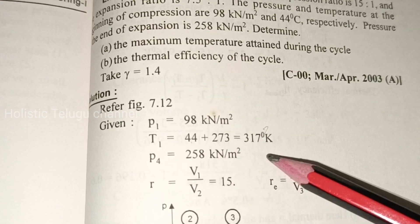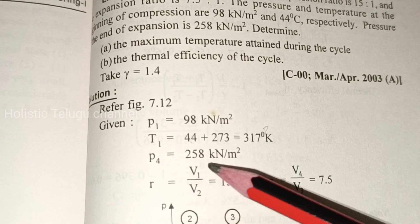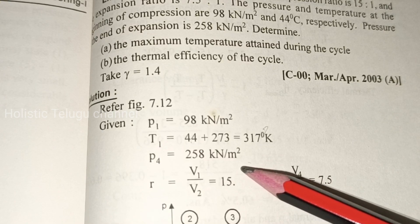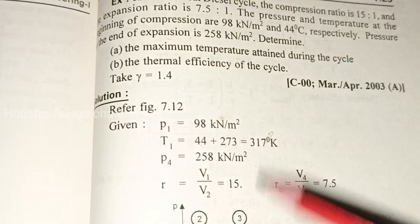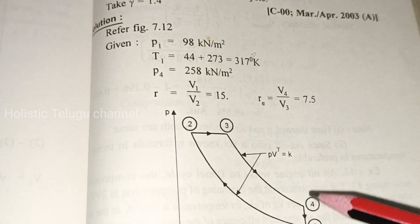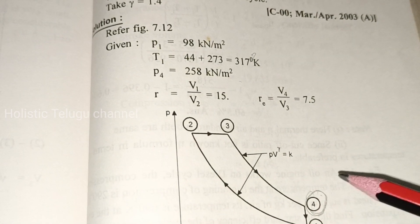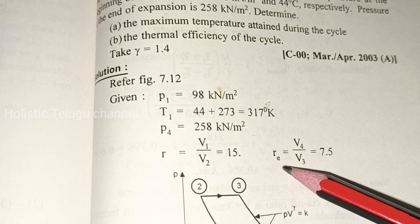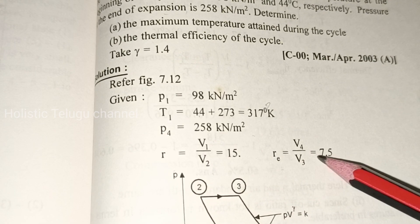The compression ratio r = V1/V2 = 15, and the expansion ratio re = 7.5. From the constant volume process, p4/T4 = p1/T1, so T4 = T1 × (p4/p1).